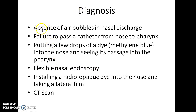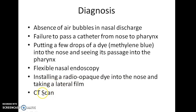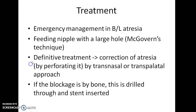How do you diagnose a case of choanal atresia? Absence of air bubbles in nasal discharge. Failure to pass a catheter from nose to pharynx. Putting a few drops of a dye, that is methylene blue, into the nose and seeing its passage into the pharynx. Flexible nasal endoscopy. Instilling a radio-opaque dye into the nose and taking a lateral film and CT scan are the various modes by which you can diagnose a case of choanal atresia.